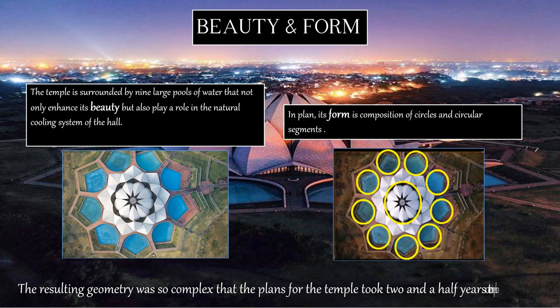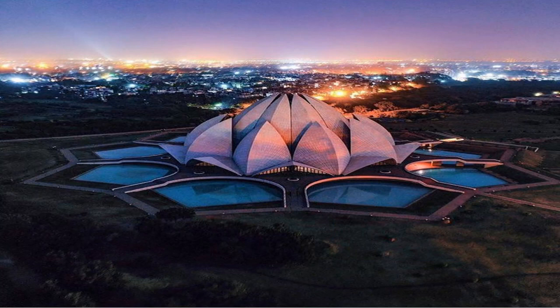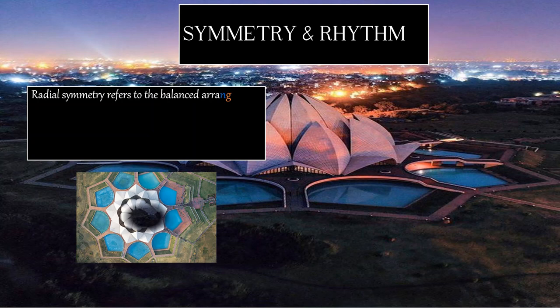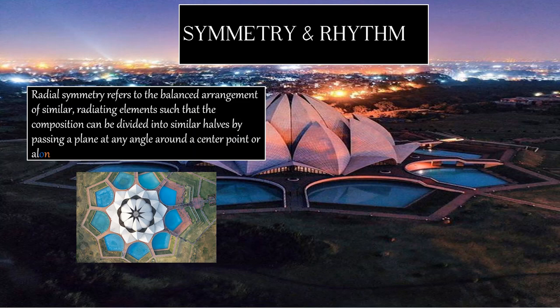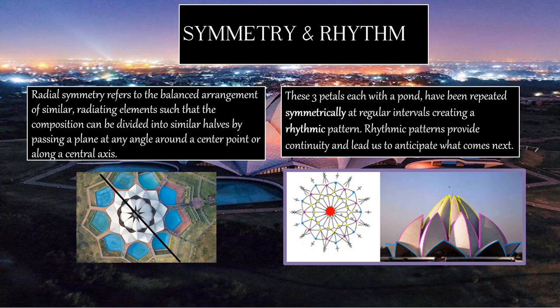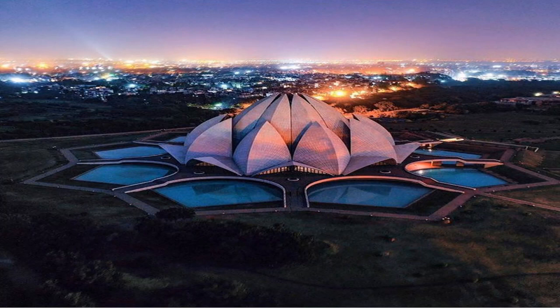The resulting geometry was so complex that the plans for the temple took two and a half years to complete. The second principle is symmetry and rhythm — here we can see radial symmetry. Radial symmetry refers to the balanced arrangement of similar radiating elements such that the composition can be divided into halves by passing a plane at an angle around the center point or along a central axis. These three petals with each pond have been repeated symmetrically at regular intervals, creating a rhythmic pattern. Rhythmic pattern provides continuity and leads viewers to anticipate what comes next.